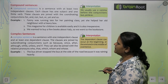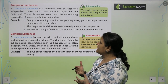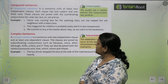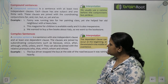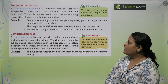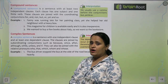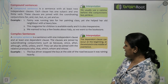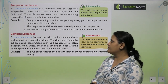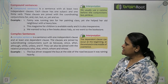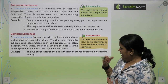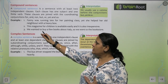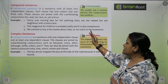The next is Compound Sentence. A compound sentence is a sentence with at least two independent clauses. Each clause has one subject and one finite verb. These clauses are joined with the coordinating conjunctions: for, and, nor, but, or, yet, and so. For example: 'Jessica Penny Hall's running late for her painting class, yet she helped her old neighbor with a heavy box.' Also: 'This magazine for children is available easily and it is also inexpensive.' And: 'We wanted to buy a few books about Italy, so we went to the bookstore.'